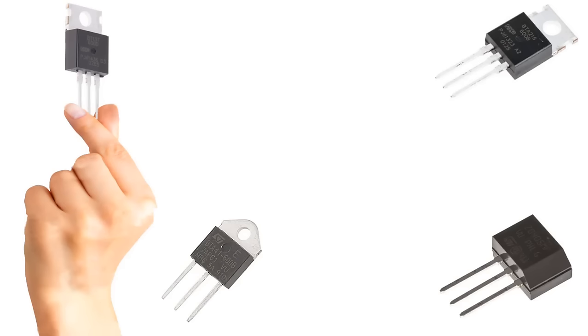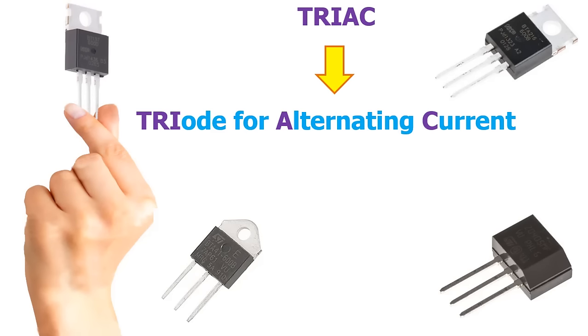The abbreviation TRIAC comes from the initials of the English words triode for alternating current. It is understood from its English name that this three pin power electronic circuit element is used in alternating current.